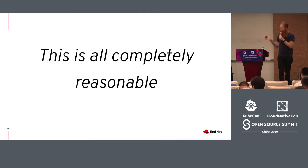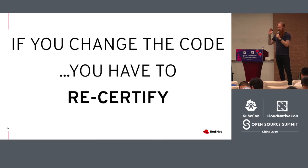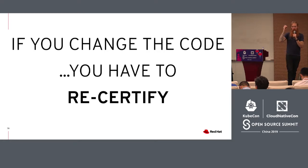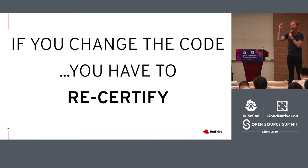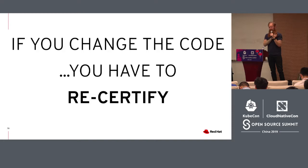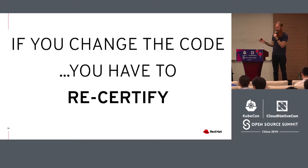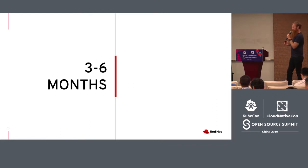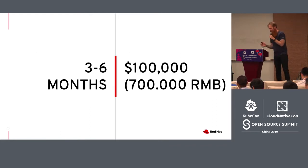This all seems completely reasonable. But if you change the code, you have to recertify it. I'll repeat that again: if you change the code, you have to recertify with an independent auditor to re-get your FIPS certification. Certification is conducted by independent auditors contracted by the vendor who produces the software. Due to this, it generally takes a minimum of three to six months and can cost over $100,000 — any time you make a code change.